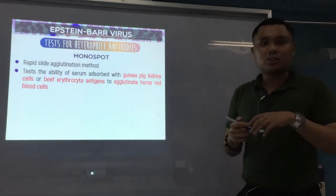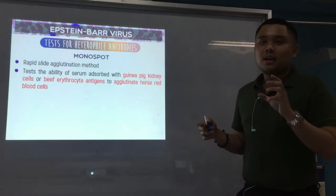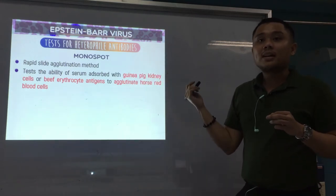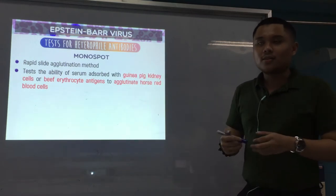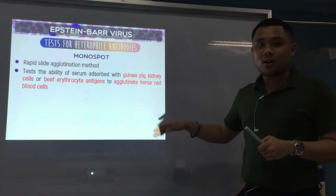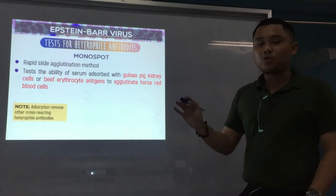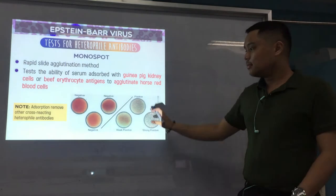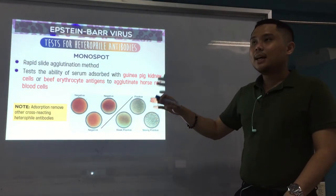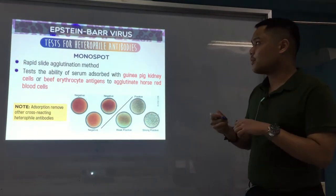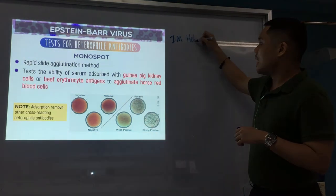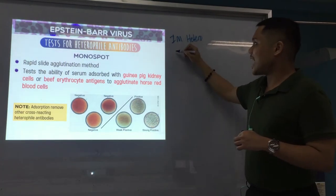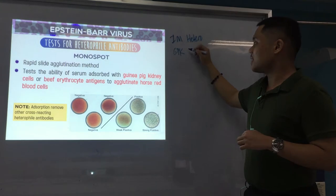The purpose is we want to determine if the serum, after reacting with guinea pig kidney cells or BIF erythrocyte antigens, still has remaining heterophil antibodies that can react with horse RBCs. That's the point of adsorption — we remove cross-reacting heterophil antibodies. A positive result is agglutination, meaning this is really used for IM heterophil antibodies.